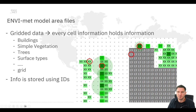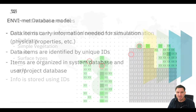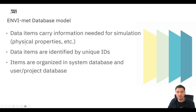EnviMet uses gridded data for its model area files, where every cell holds information — about a building, simple vegetation, trees, surface types, etc. All of these grids need more information than just 'is there grass here?' — but what type of grass, how high, what's the albedo, how deep are the roots, what is the species, crown size, crown start and end, leaf albedo, leaf area density. So what EnviMet does is store a database ID in each cell instead of all this information. These database IDs carry the physical properties needed for the simulation — albedo, emissivity, and so on. They are identified by unique IDs: a string of six characters linking to the database, organized in a system database that comes with EnviMet.